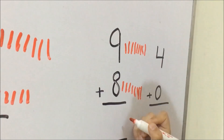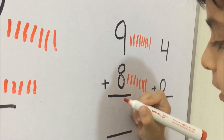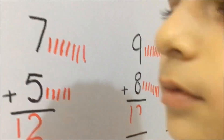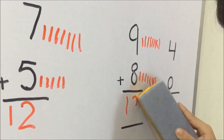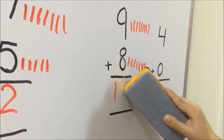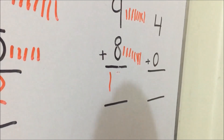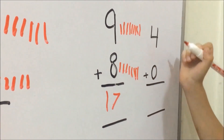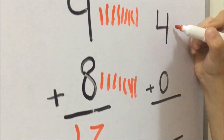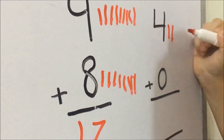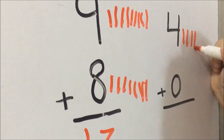Friends, seventy answers here and we will write seventy answers. Seventeen answers here. Friends, we will write four lines here — one, two, three, four.